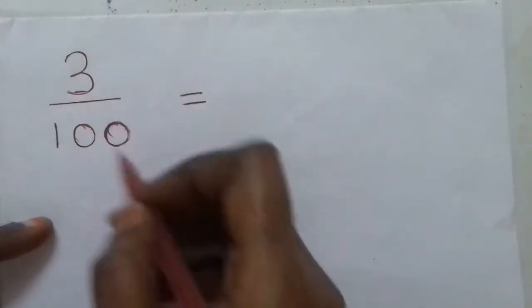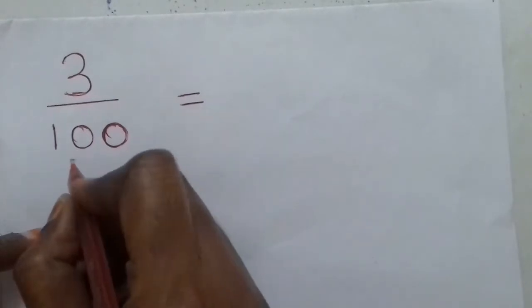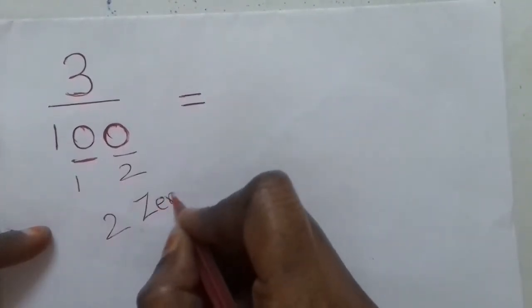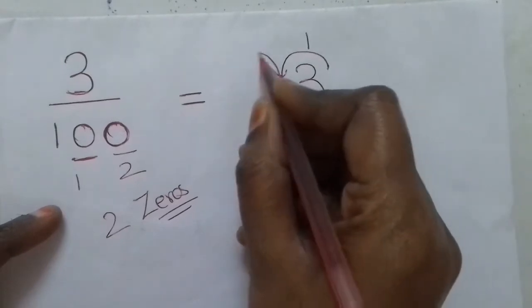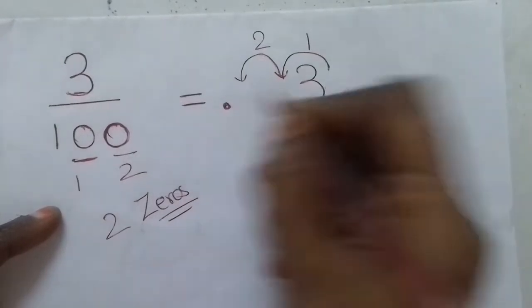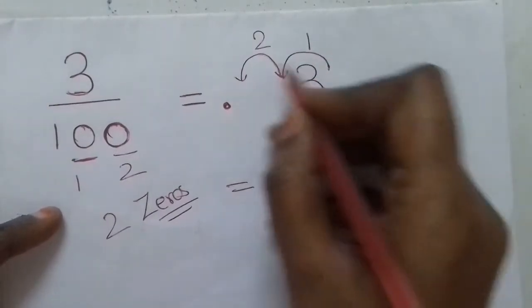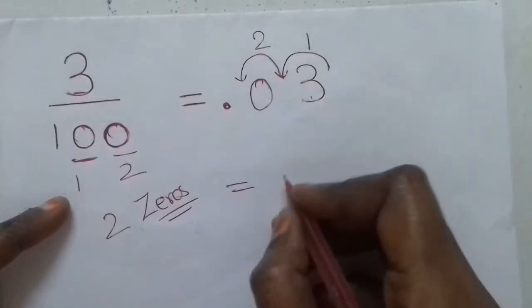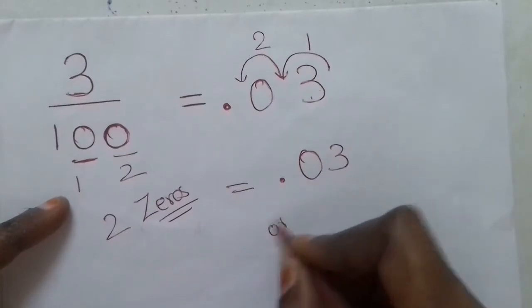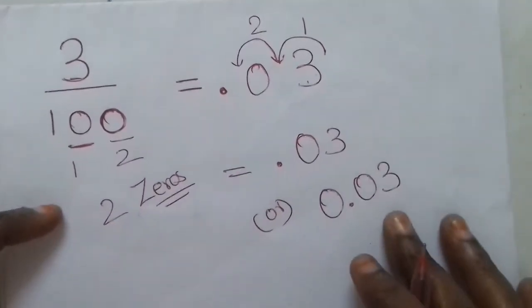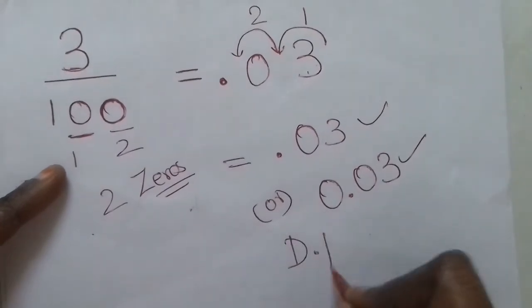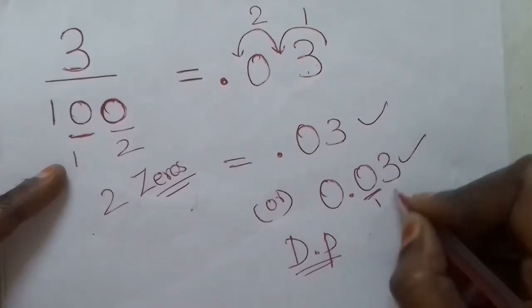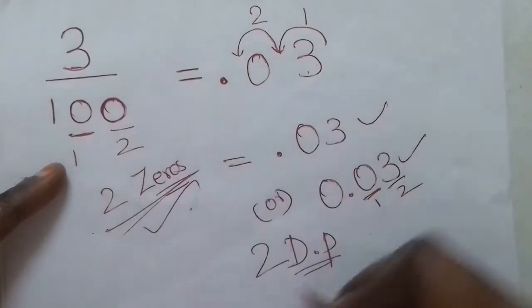Second question: 3 by 100. First step — count the number of zeros in the denominator. There are two zeros. Next, write the numerator as it is and shift the decimal point two places to the left. The first place shift and the second place shift — since there is no digit in one place, we add a zero. So the answer is 0.03. Cross-verify: there are two zeros in the denominator and two decimal places after the decimal point — one and two. Two zeros, two decimal places. Correct.